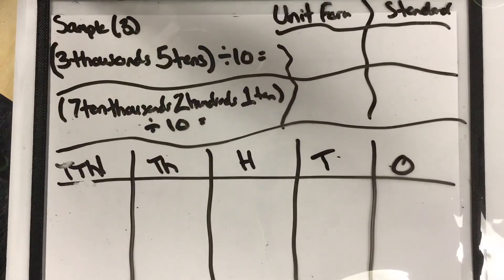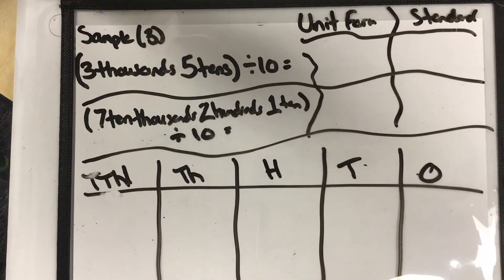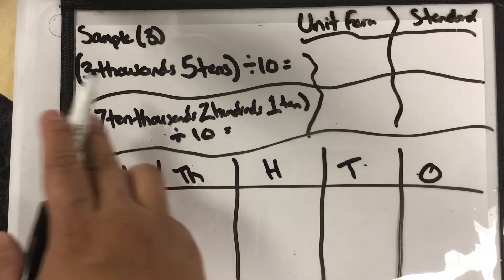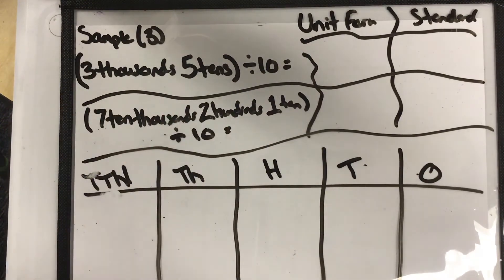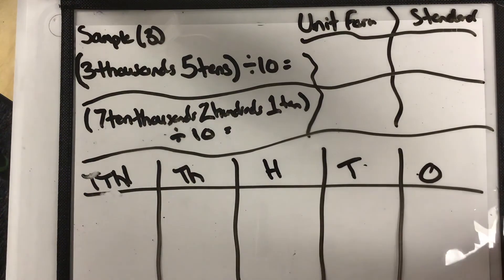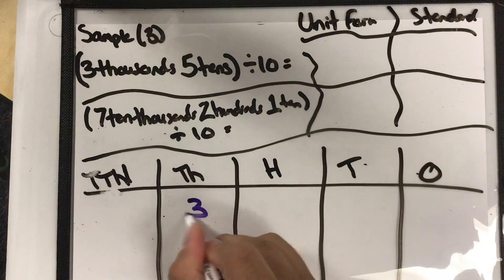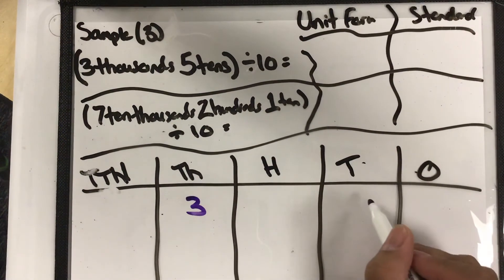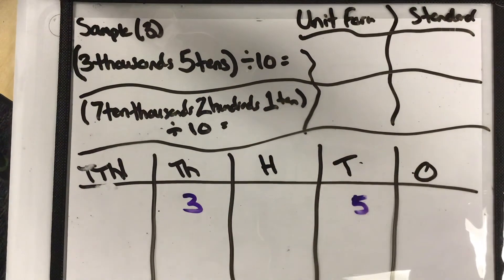So here's another example. We're looking at an example from number three. I changed the problem just a little bit and we're only going to do one of them. So we have three thousands and five tens divided by 10. Well, what would that look like? So we're going to start out with three thousands and five tens. And when we have three thousands and five tens, we're dividing by 10. So which way do they go?